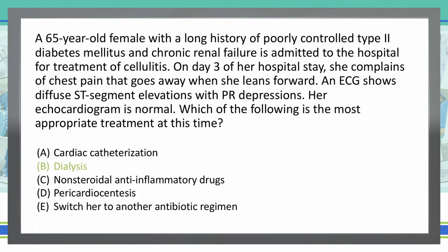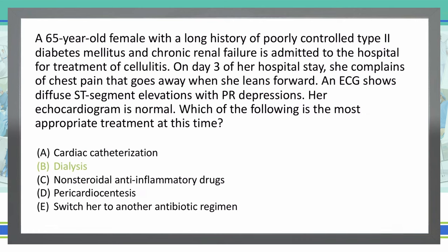B is the correct answer. This is pericarditis due to uremia. Our uric acid levels are elevated in the blood because they are not being cleared by the kidneys due to chronic renal failure. So she has chronic kidney disease causing the pericarditis, and what we need to do is remove that uric acid from the blood — and we do that with dialysis.